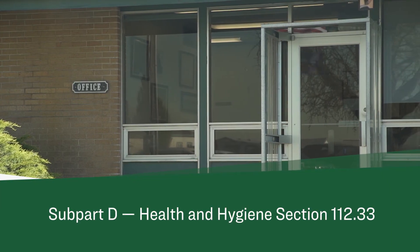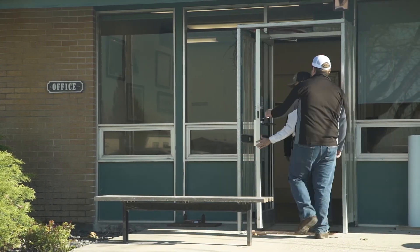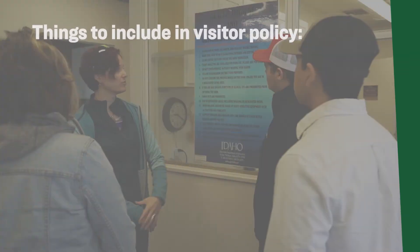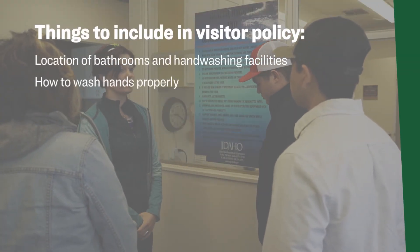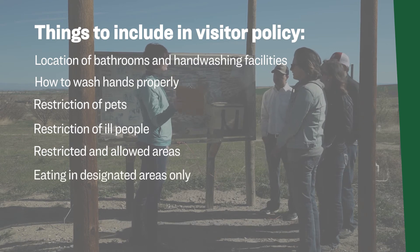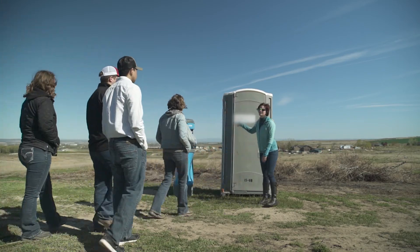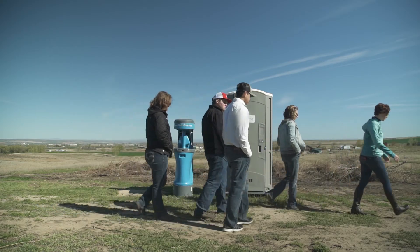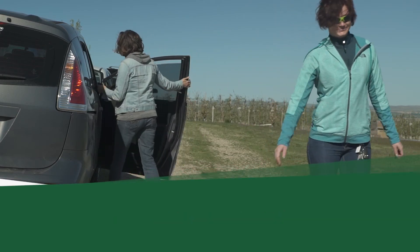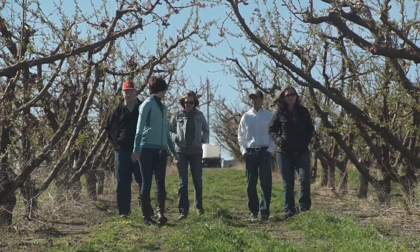Visitors to the farm must be made aware of policies and procedures set by the farm to protect covered produce and food contact surfaces from contamination. This can be done verbally, through posted signs, or a check-in signature page at the front door. Examples of things to include in your policy are locations of bathrooms and hand washing facilities, how to wash hands properly, restriction of pets, restriction of ill people, restricted and allowed areas, and eating in designated areas only. Toilet and hand washing facilities must be made available to visitors and volunteers. Employees should be aware of restricted and allowed areas for visitors, and if an employee sees a visitor enter a restricted area, the employee should immediately contact a supervisor. Employees should also be aware of ill visitors and restrict them from covered produce areas so they do not contaminate covered produce.